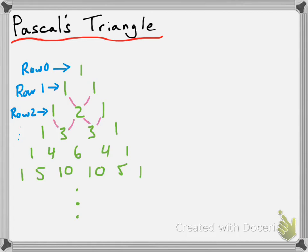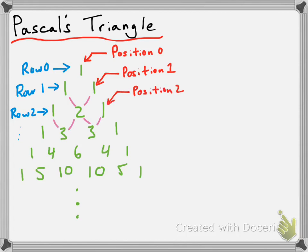Also, every term is going to have a position. The idea is that you have several rows and each term in any particular row is going to have a unique position, and that position is also going to be represented by a number. All the terms on the very left of each row are going to be position zero. All the terms next to that are going to be position one. All the terms next to that are going to be position two, then position three, and so on.